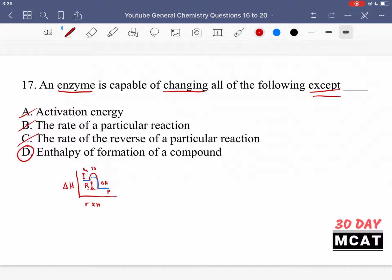But D is the correct answer. It cannot affect the enthalpy of formation of a compound which is the difference between reactants and products. The enthalpy of formation is dependent on the bonds you break and form and that is a characteristic of the actual reaction itself, not going to be changed when we have an enzyme present.